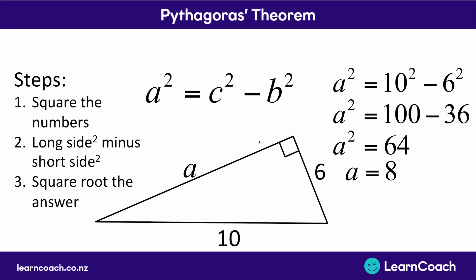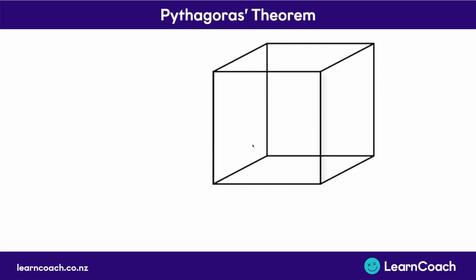Now there's one final type of question that can be given for Pythagoras. These two-dimensional triangles are drawn flat on a piece of paper, but sometimes you can be given 3D situations where you need to use Pythagoras. These 3D situations are getting onto the merit and excellence level stuff, but actually it almost seems easier than some of the stuff you've learnt. Let's look at how we do this.